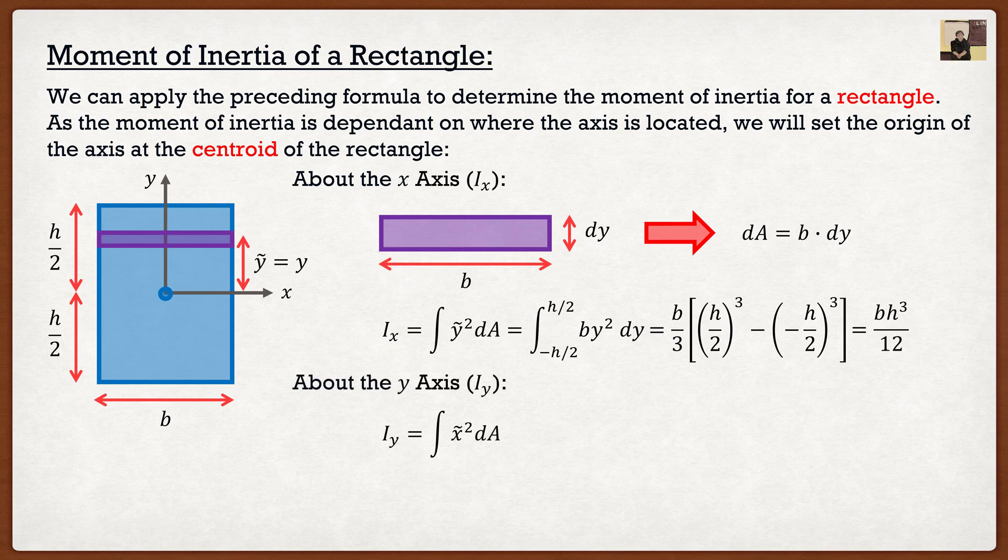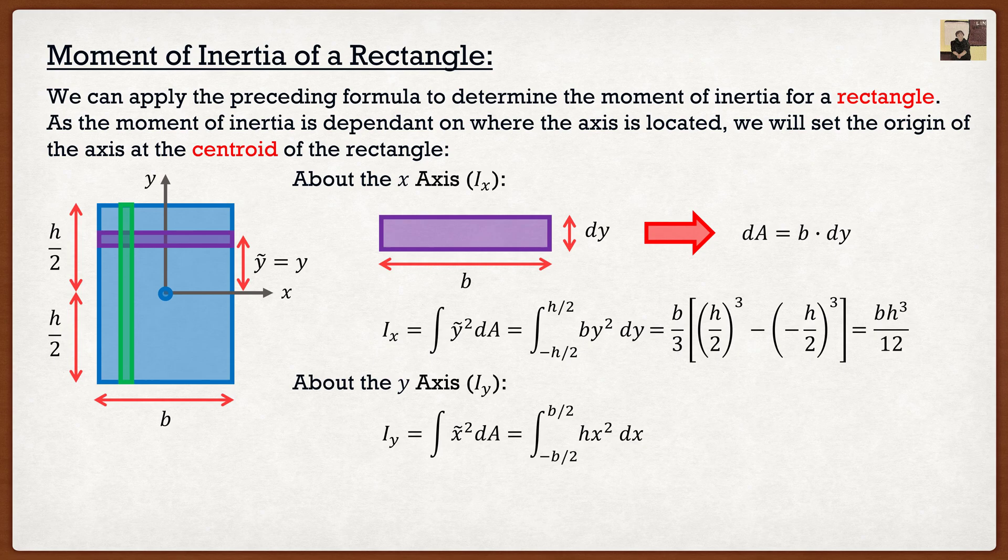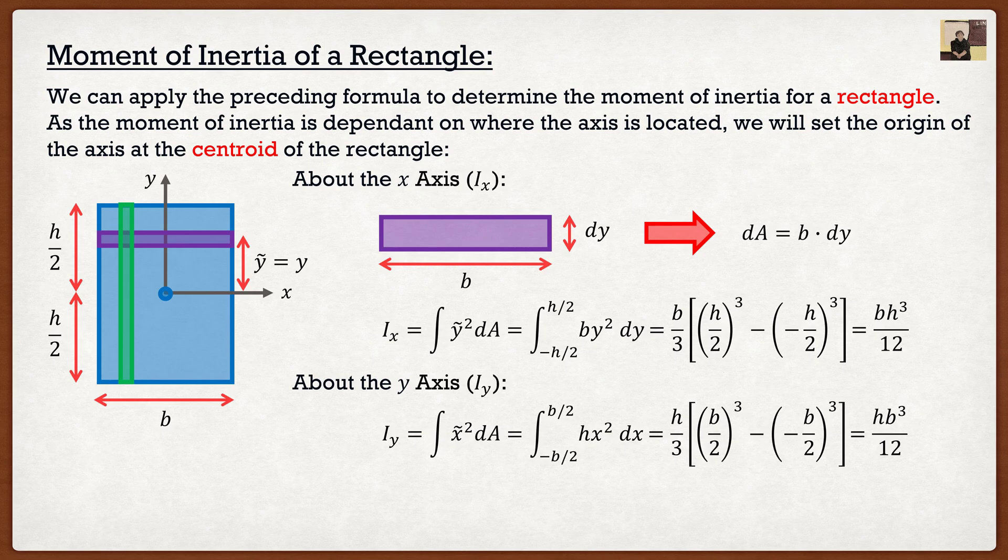Now for the y axis, it's going to be the exact same thing. The only thing is, I'm going to look at this and say, okay, since I have an x squiggle, I want a dx. And the dx actually corresponds to a vertical slice. So I'm going to take this green vertical slice, and we'll get the following relationship for the area. And if I were to do the integral, I'm going to get height times base cubed, divided by 12.